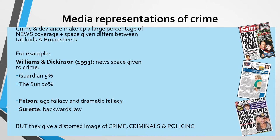Again, the way the media reports crime doesn't reflect the reality — this is the misrepresentation of crime. Marsh highlights that violent crimes are over-reported. Felson introduces two key concepts: the 'age fallacy' — the idea that most media representations show older people as more likely to be victims — and the 'dramatic fallacy' — that newspapers are more likely to cover quite sensational, unique, and dramatic stories. Surrette talks about the 'backwards law,' which we'll come back to shortly.